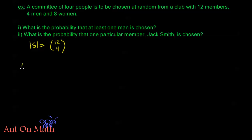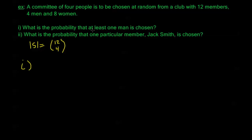For part one: what is the probability that at least one man is chosen? This is the type of problem where it's very convenient to use the complement. I could calculate the probability that one man is chosen, add that to two men, three men, four men — or I can just look at the probability that no men are chosen and subtract it from one. And that's exactly what we're going to do.